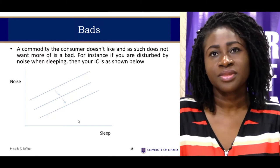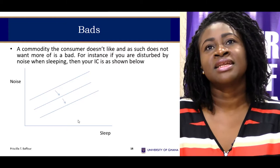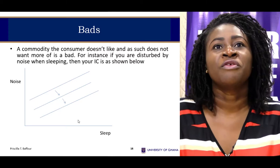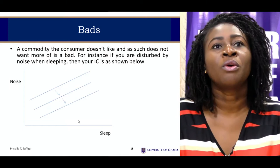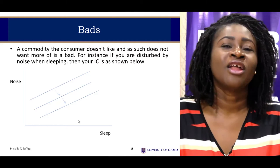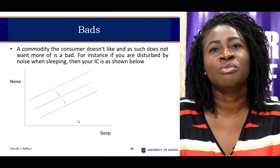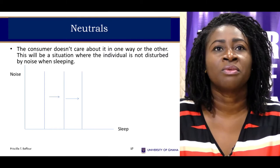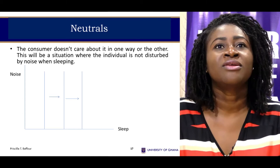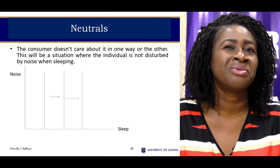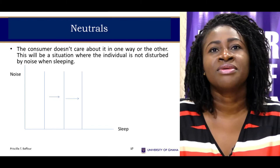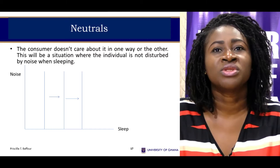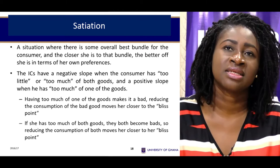Another scenario involves bads — commodities the individual does not like and does not want more of. For a light sleeper trying to nap, more noise reduces satisfaction, so satisfaction increases as you move down the indifference curves toward less noise. If noise does not disturb you, it is a neutral good — the consumer doesn't care about it but cares about the other good. This gives vertical indifference curves moving to the right, with higher satisfaction as you move rightward.